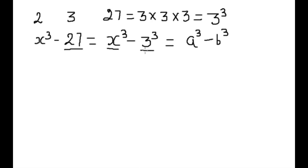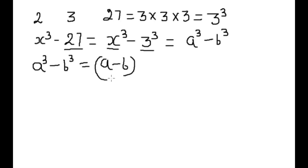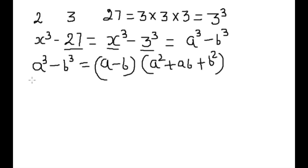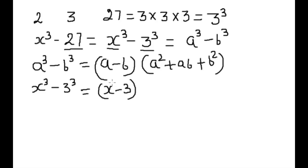If we look at this, it is equal to the formula a cube minus b cube, where a is x and b is 3. Now we can write: a cube minus b cube is equal to a minus b, times a square plus ab plus b square. This is the formula of a cube minus b cube.